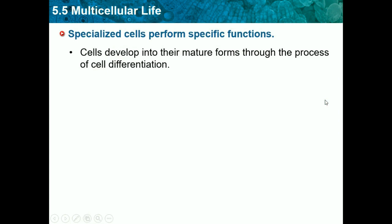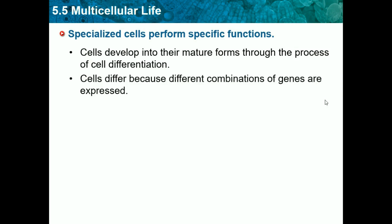Specialized cells perform specific functions. Cells develop into their mature form through the process of cell differentiation. Cells differ because different combinations of genes are expressed — all types of cells are unique because they have different genes that tell them to do different tasks.